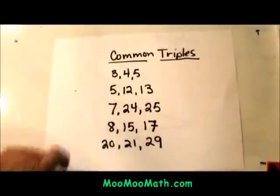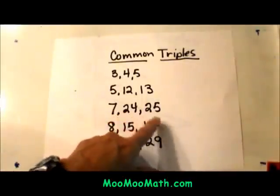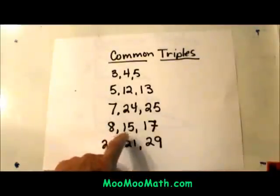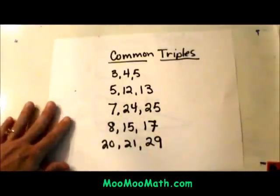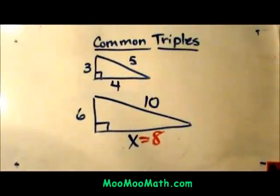These are 3 more common triples: the 7, 24, 25; the 8, 15, 17; and the 20, 21, 29. So those are common triples that you can take and multiply each side by common factors.